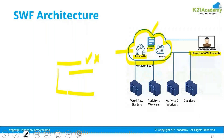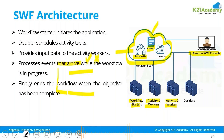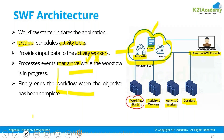Via the AWS SWF console you can see the tasks getting executed. The workflow starter doesn't do the work — these are the activity workers who perform the tasks. The workflow starter only controls which tasks are being done. The decider, which holds the decision list, schedules the activity tasks, and the activity workers perform them. The data required by the activity worker is provided by the workflow starter.